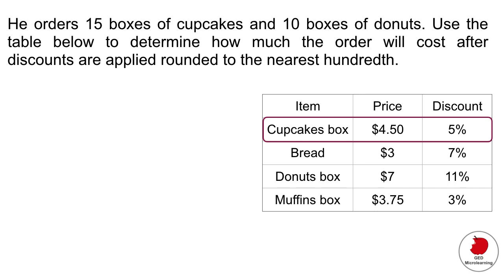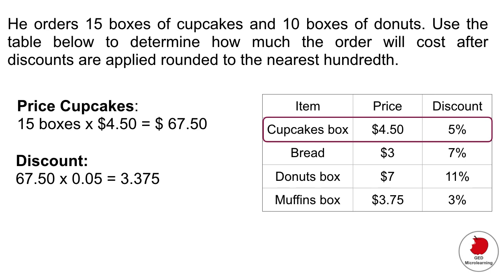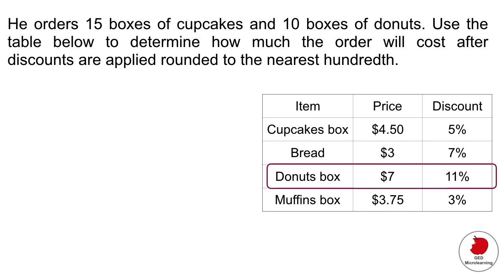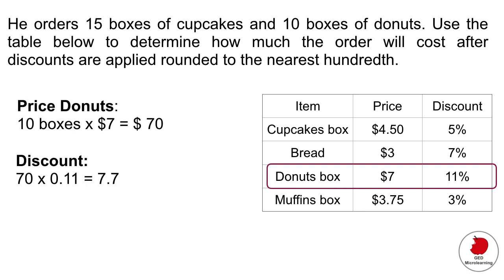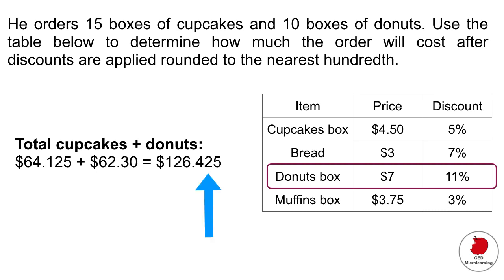First of all, let's calculate the price of stuff. So for cupcakes, he's going to buy 15 boxes. So we would multiply the price times the number of boxes. And then we have to apply the discount. So we would multiply that number by 0.05. That gives us $3.375. So we're going to subtract that number from the original value. And that gives us the discounted price on cupcakes. We're going to do the same thing with the donuts. So 10 boxes times $7 gives us that. We apply the discount, which is 11% in this case. That gives us $62.30. And then basically the total is going to be these two added together. And it asks us in the question to round to the nearest hundredth. We would round up because it's 42.5. So we would round up to 43.